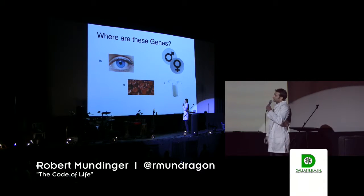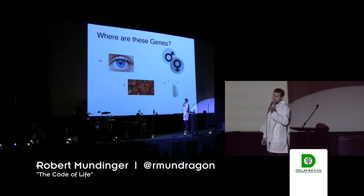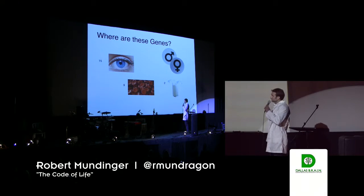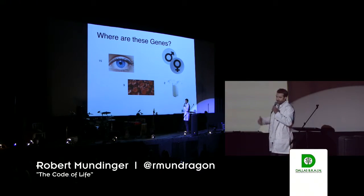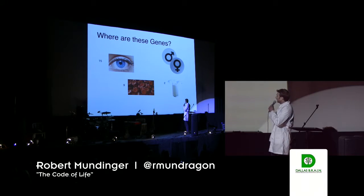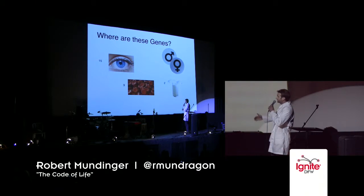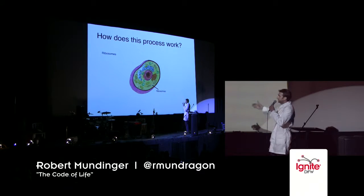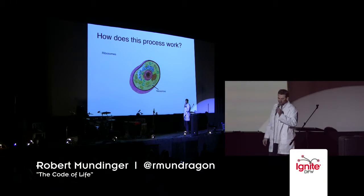The gene for eye color is on the 15th chromosome. Your gene for blood type is on your ninth chromosome. If you had a white Russian tonight and have lactose intolerance — that was a terrible idea — that's on your second chromosome.